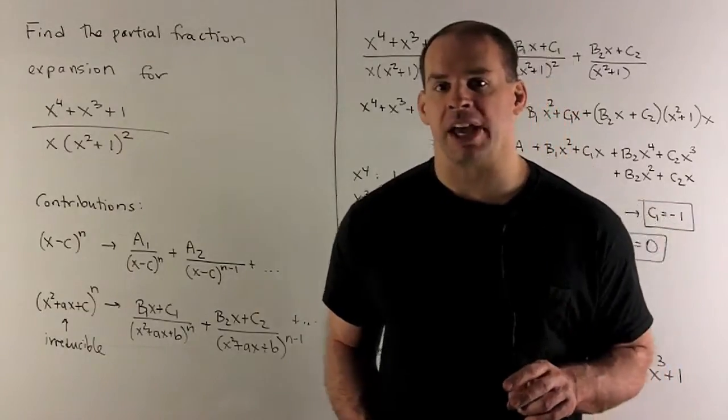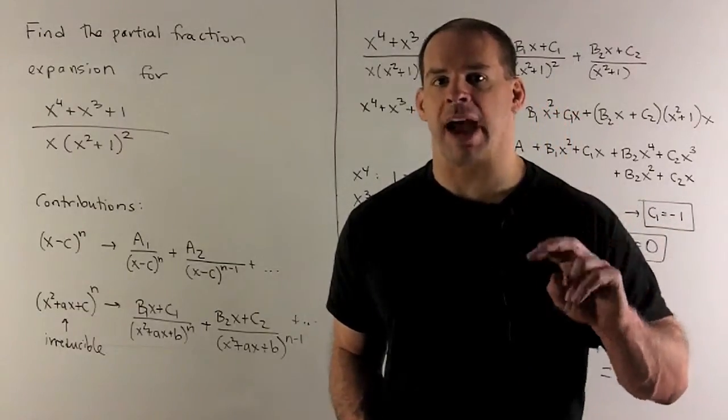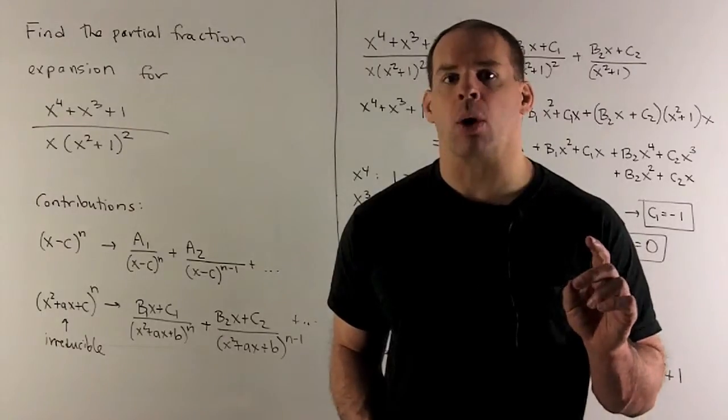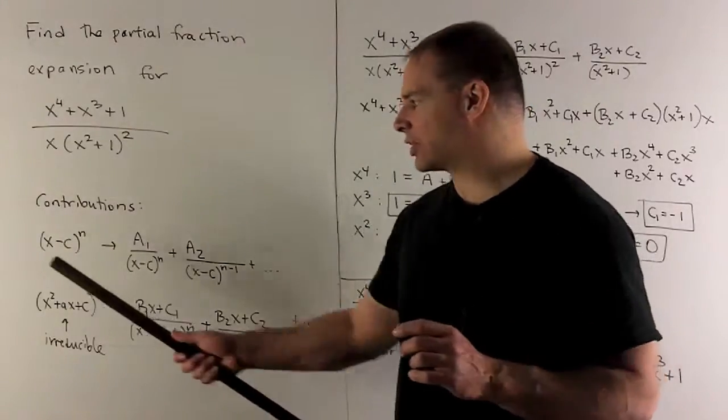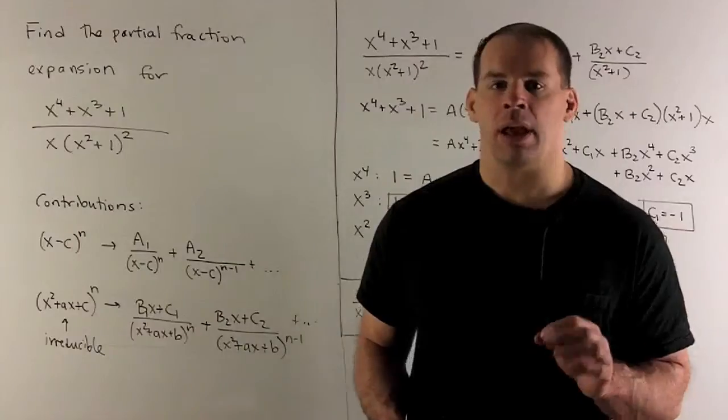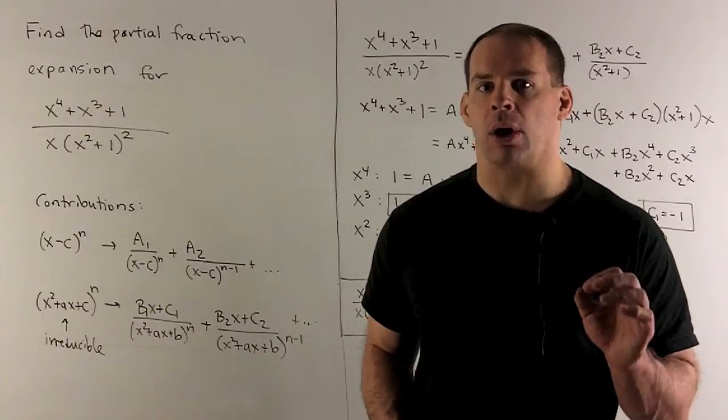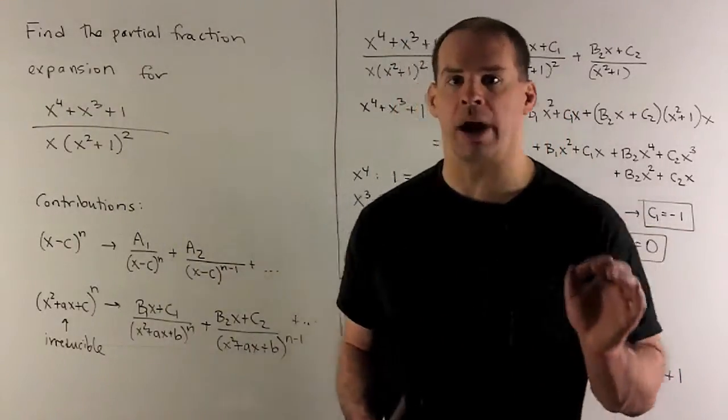Now, from that factorization, there's going to be two types of factors. We'll have linear factors to a power, so it's going to be like x minus c to the n. We'll have irreducible quadratics to a power, so that'll be like our x squared plus 1 squared.